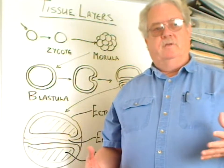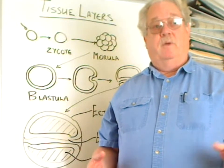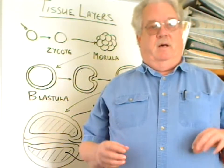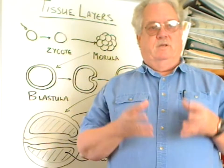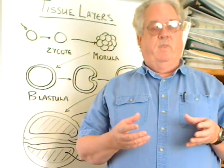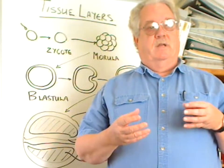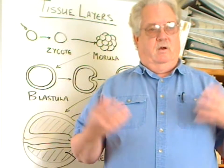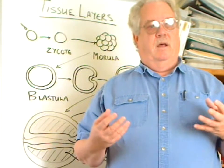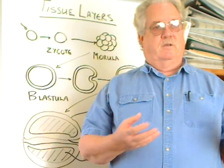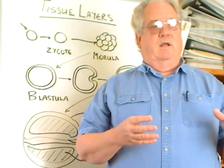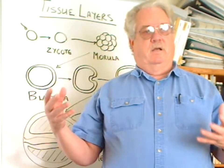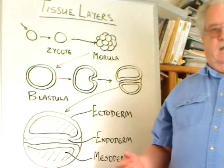In order to understand some of the characteristics of the animal phyla, we have to understand tissues and tissue layers. When we're talking about tissues, we're talking about similar cells that are organized into a structure that has a particular function. In order to better understand the use of those tissues in large, complex organisms or simple organisms like some of the lower phyla, it helps to understand how the tissues and tissue layers come about.